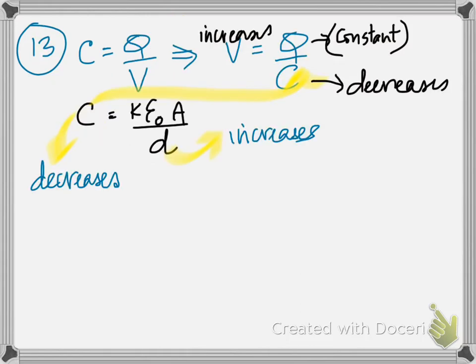Now, number 13 now, capacitance is the ratio of charge to potential difference. Here, the plates are being separated, which means D increases. If D increases, the capacitance decreases. And when the capacitance decreases in this formula, holding the charge constant, this decreases, it's in the denominator, therefore the voltage has to increase.